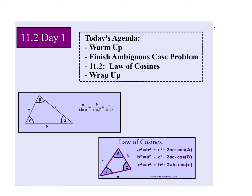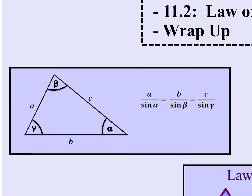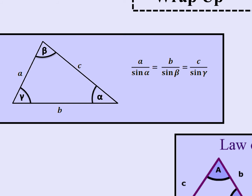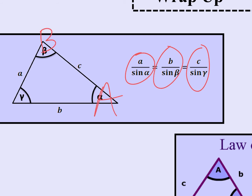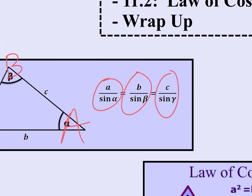Today we're covering the Law of Cosines. You already know the Law of Sines. You might notice things look different — they're all flipped over. I didn't teach you wrong; either way works. If you want to put little a on top and sine of big A on the bottom, that's fine. Also, some textbooks use Greek letters instead of A, B, and C — just know those are synonymous.